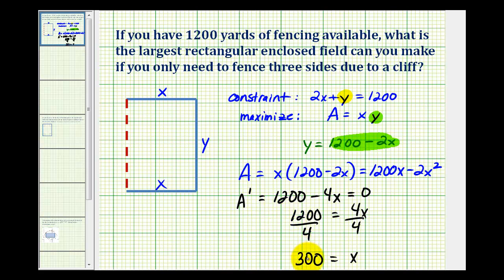Now even though we only obtain one critical number, we should verify that this will produce a maximum value, not a minimum value. And we could do this a couple of ways. If we determine the second derivative, we can determine if the function is concave up or down at this value of x. So A double prime is equal to negative four, which means the function is always concave down on the entire interval, which means at the critical number of x equals 300, we do have a relative maximum.